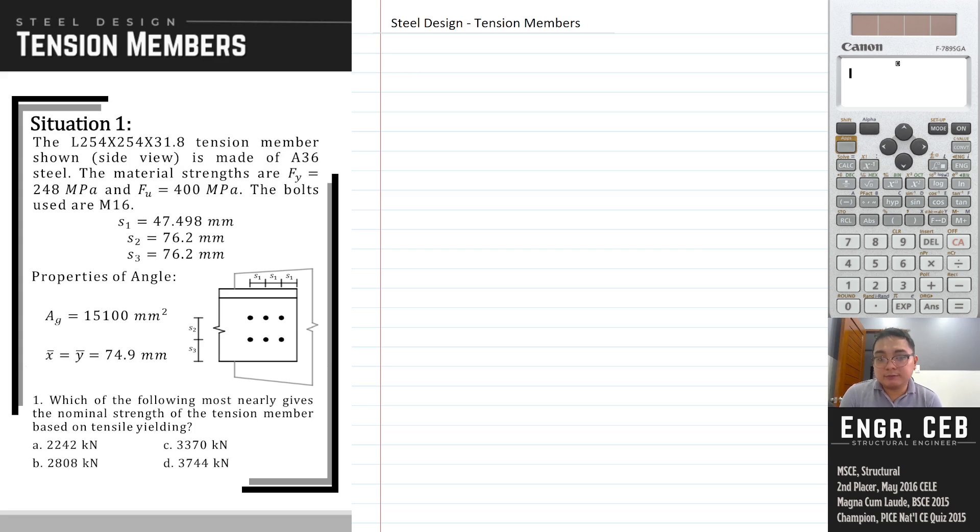Which of the following most nearly gives the nominal strength of the tension member based on tensile yielding? Based on tensile yielding, when we say tensile yielding, that is the failure of the member on the gross area.